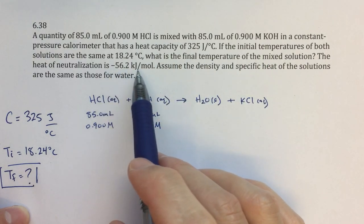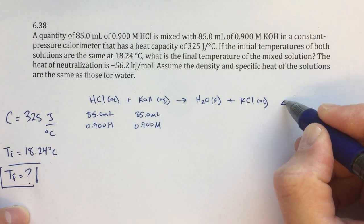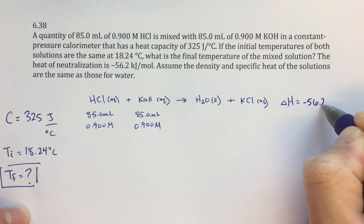The heat of neutralization is minus 56.2 kilojoules per mole. That's for this reaction. So that is the delta H for this reaction, minus 56.2 kilojoules.